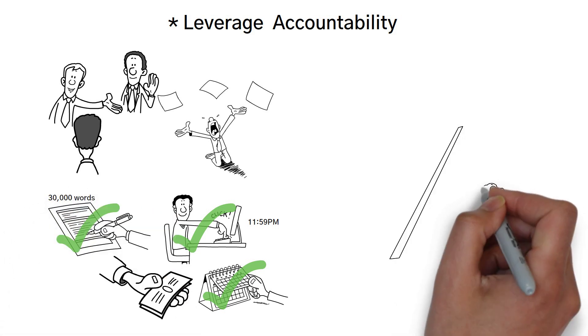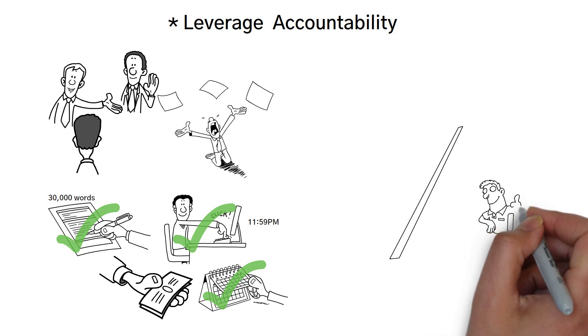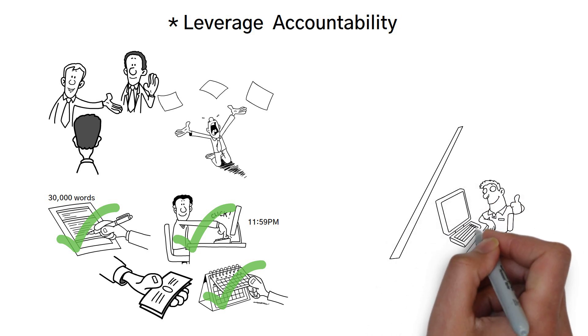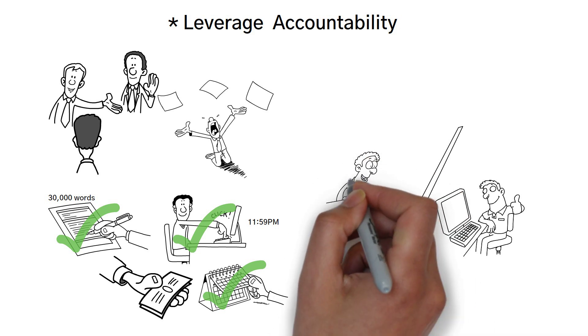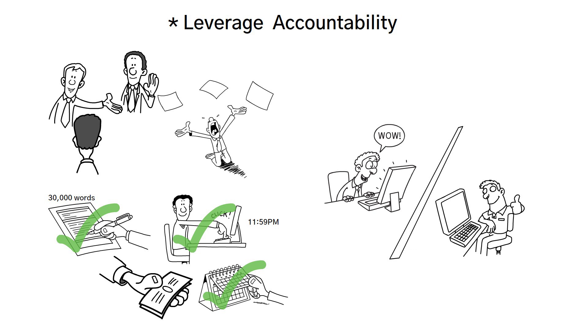So anytime you're trying to build a habit, make use of external accountability. Tell them what you are doing or planning to do. That will work every single time, no matter what area you're trying to build your accountability.